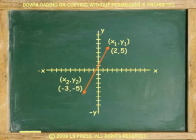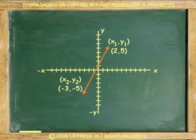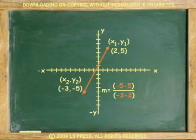For example, the line passing through two points has a slope of negative 5 minus 5 over negative 3 minus 2. Solving the equation, negative 5 minus 5 is negative 10, and negative 3 minus 2 is negative 5.